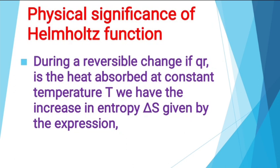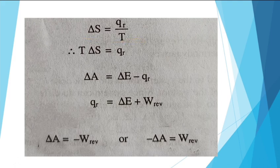Our next point is the physical significance of Helmholtz's function. During a reversible change, when heat of reaction Q_R is absorbed at constant temperature, we have an increase in entropy delta S given by delta S equal to Q_R divided by T. This is the definition of entropy, where delta S is the change in entropy equal to delta S of the system plus delta S of the surroundings. Therefore, T delta S is equal to Q_R.